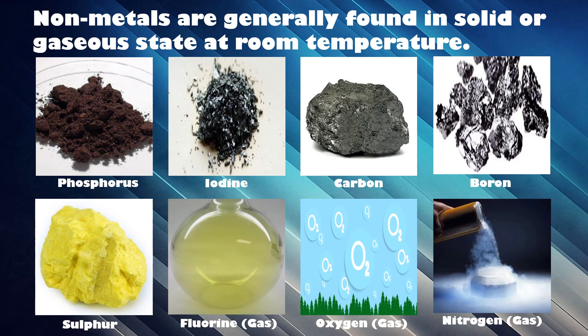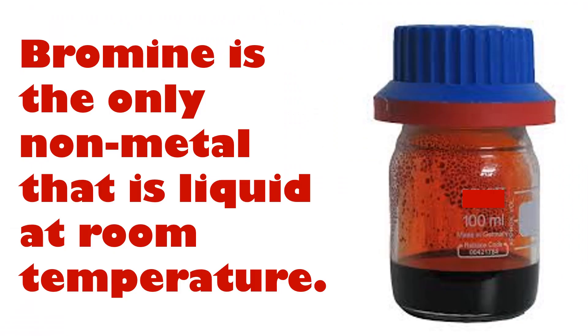On the other hand, nonmetals are generally found in solid or gaseous state at room temperature. Phosphorus, iodine, carbon, boron, and sulfur are examples of nonmetals found in solid state at room temperature. Whereas fluorine, oxygen, and nitrogen are some nonmetals found in gaseous state at room temperature. Bromine is the only nonmetal that is liquid at room temperature.